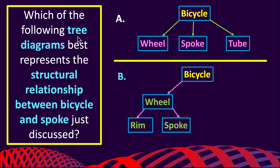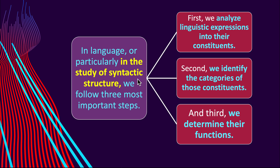Which of the following three diagrams best represents the structural relationship between bicycle and spoke? Diagram A shows: bicycle → wheel → spoke → tube. Diagram B shows: bicycle → wheel, with wheel having two further parts — rim and spoke. The correct answer is B. It more accurately reflects the structural relationship, stating that spokes are constituents of wheels, which in turn are constituents of the bicycle. This correctly describes the relationship as a hierarchical one.